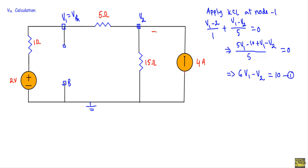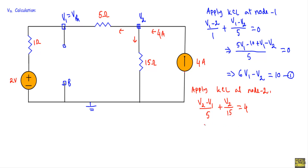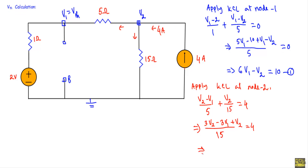At node 2, the 4 ampere current is entering, and all other currents are unknown and outgoing. Applying KCL at node 2: (V2 − V1) / 5 + V2 / 15 = 4. Taking LCM of 15: 3V2 − 3V1 + V2 = 60, which gives equation 2: −3V1 + 4V2 = 60.